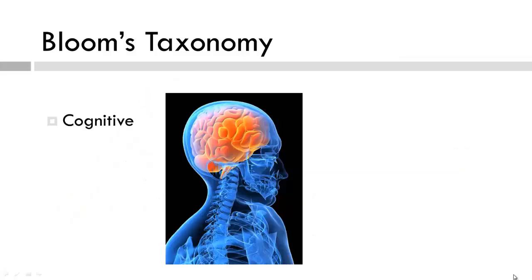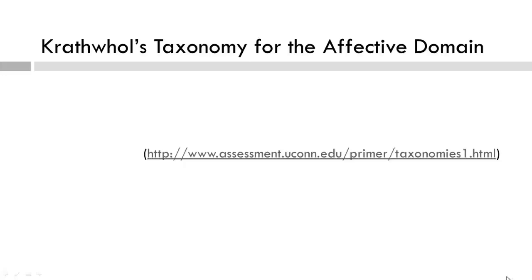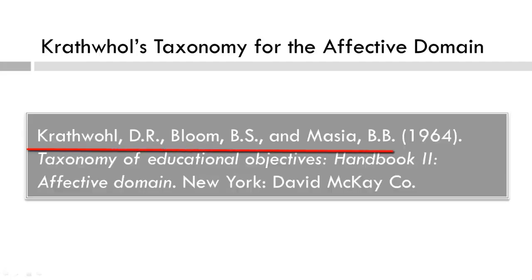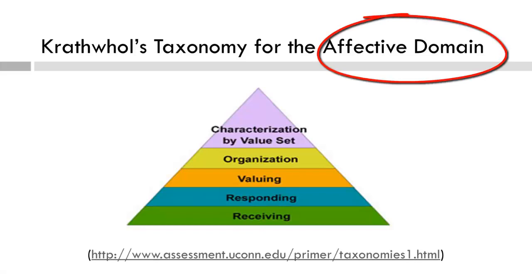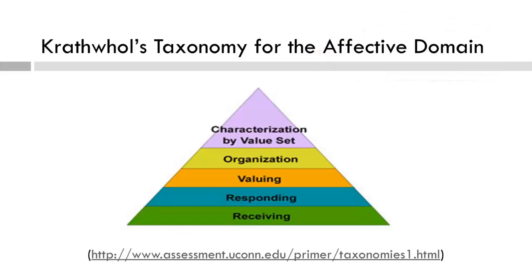Bloom's taxonomy addresses the cognitive domain. However, additional classification systems were established to address other domains. Specifically, Krathwohl's taxonomy for the affective domain — notice the authors and notice it is Handbook 2. This taxonomy provides a group of criteria for classifying outcomes that have to do with the affective, which relates to attitudes, moods, and feelings. Although we will not spend time examining the affective domain, pause the video and take a look at how this taxonomy is organized. If you want more information, it is provided in this week's readings.